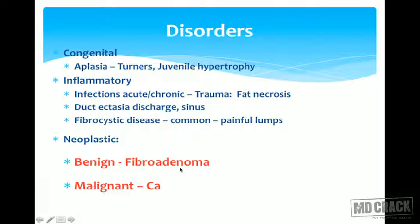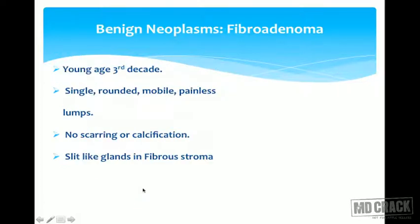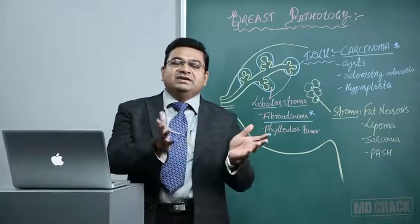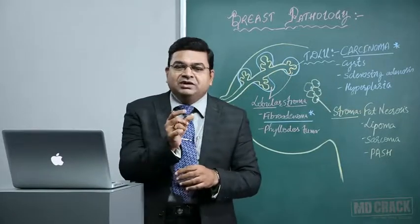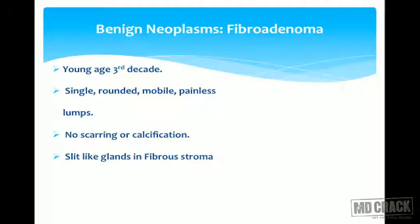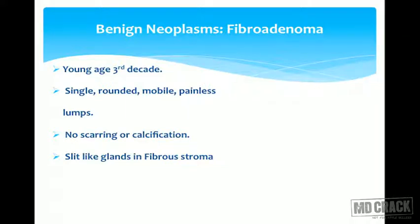The most common benign tumour is fibroadenoma, very common in young adult females — classically in the second and third decade of life. It is classically diagnosed as a single, round, mobile, painless lump of one to two years duration. These lumps move and skip away from your fingertips, which is why we use the term 'breast mouse.'